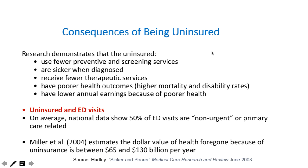The consequences of being uninsured are significant. Research shows that uninsured people use fewer preventive and screening services, are sicker when diagnosed, receive fewer therapeutic services, have poorer health outcomes, and have lower annual earnings due to poorer health. Nationally, 50% of emergency department visits are non-urgent or primary care-related and could be handled by a primary care physician at much lower cost. Miller estimates the dollar value of health foregone due to uninsurance at $65 to $130 billion per year.